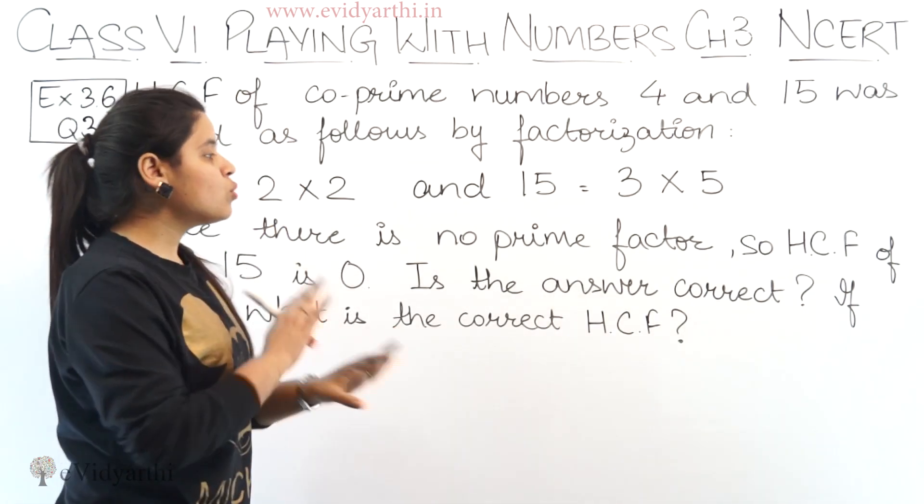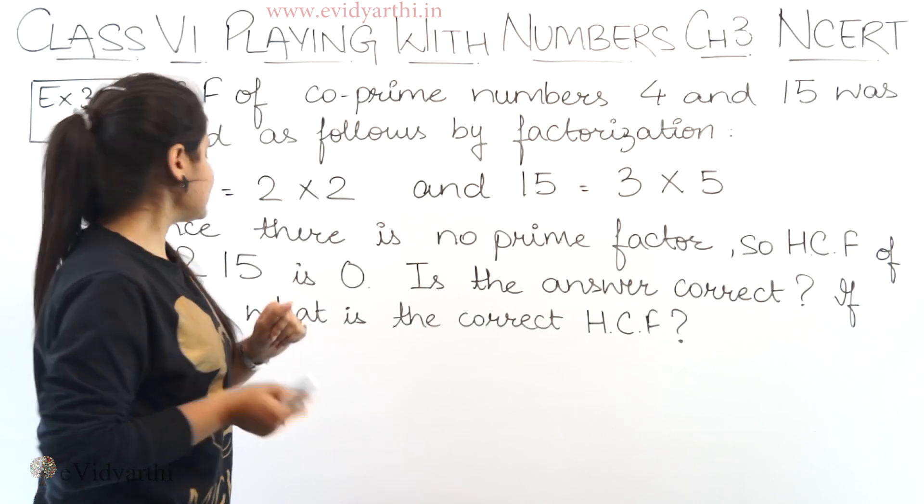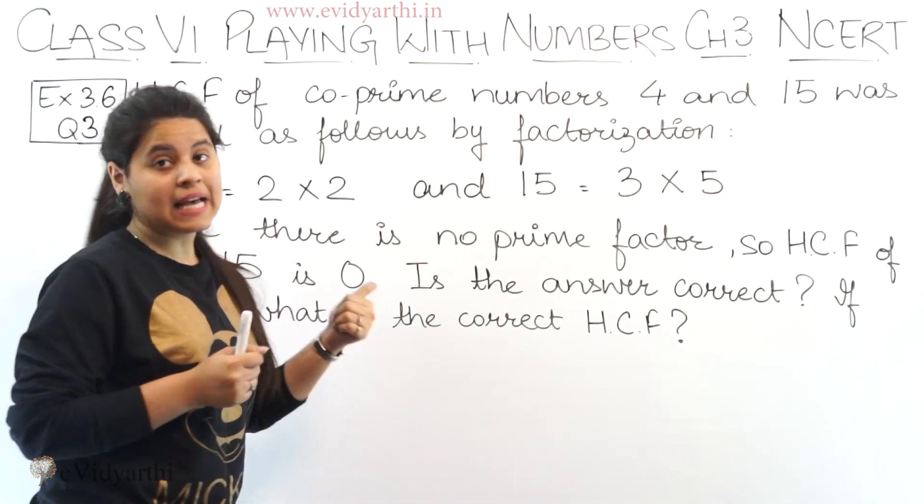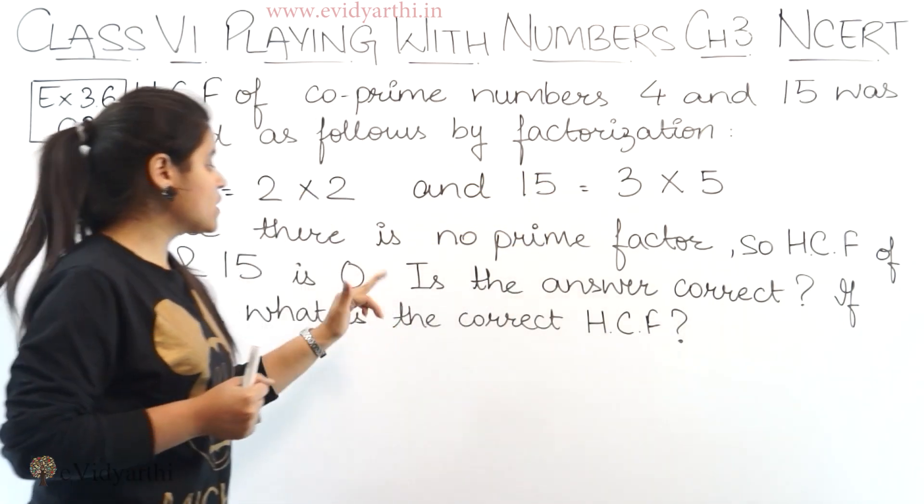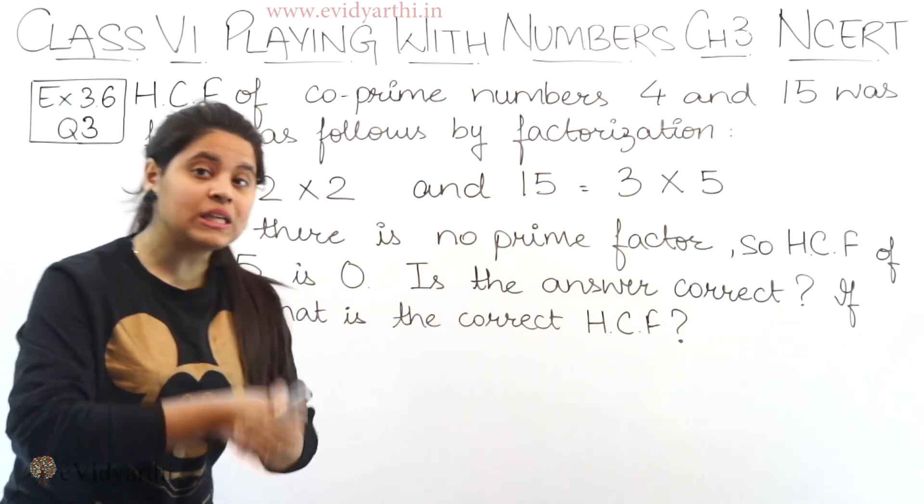Since there is no prime factor, so HCF of 4 and 15 is 0. This means there is no common factor between them, so the HCF would be zero.